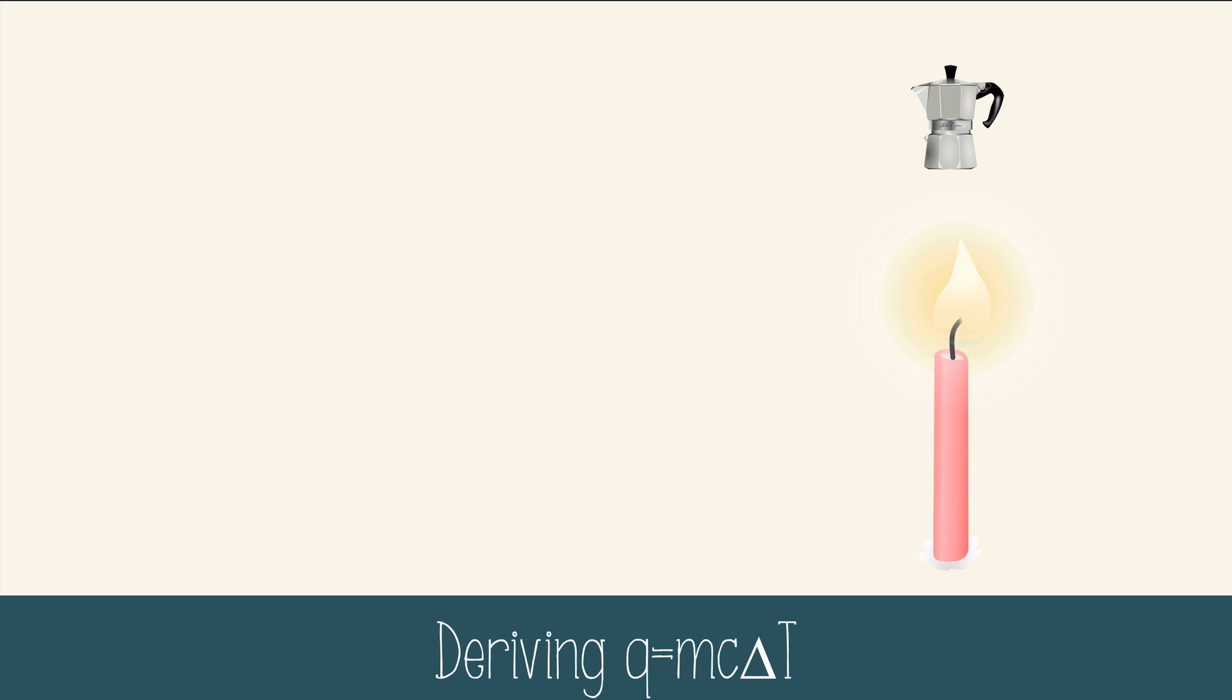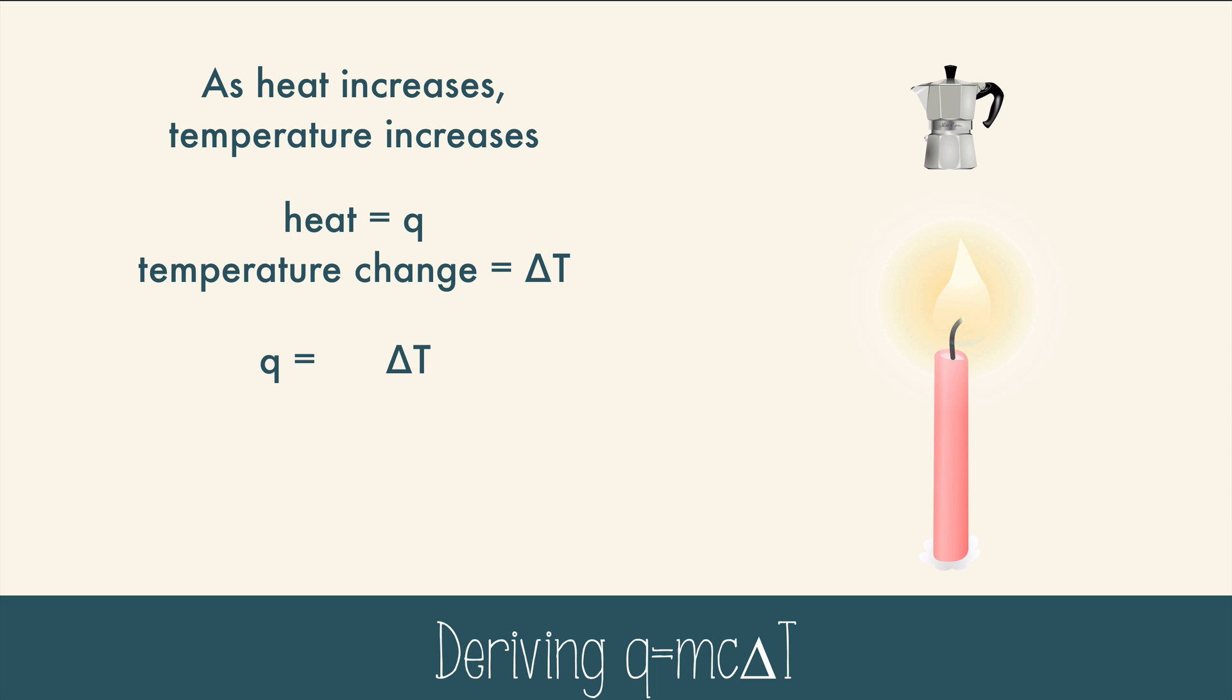So, how do we use temperature to find heat? Imagine you have a flame, and you hold a steel coffee percolator above the flame. Heat will move from the flame to the percolator, which will increase the speed of the particles, also known as temperature. So, as heat increases, temperature increases. This is a direct relationship. If heat is represented by Q, and the temperature change is delta T, then when we write our equation, Q and delta T will be on opposite sides of the equal sign.